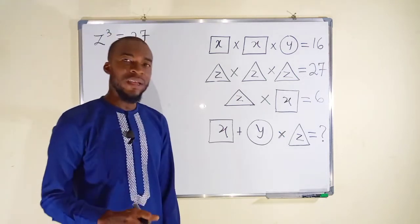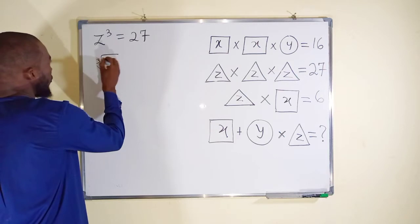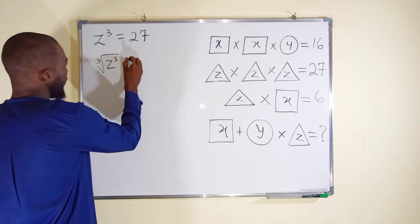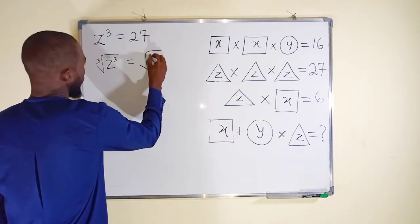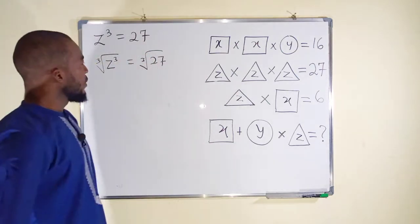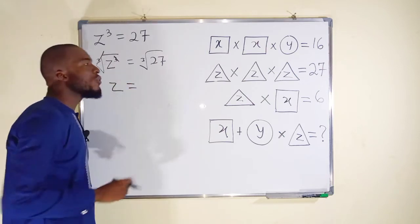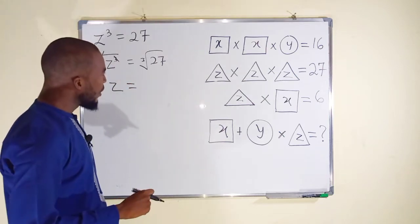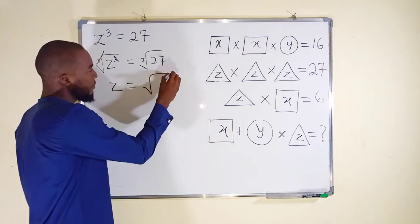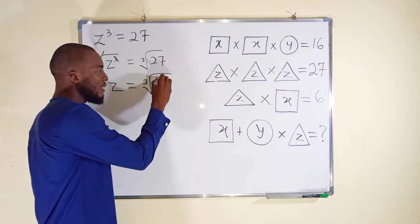To find the value of z we can take the cube root of both sides. So we have cube root of z power 3, this is equal to cube root of 27. Cube root will cancel cube, we have z. And what is cube root of 27? You know, 27 can be written as 3 power 3.